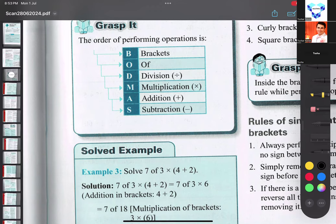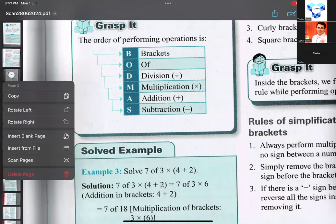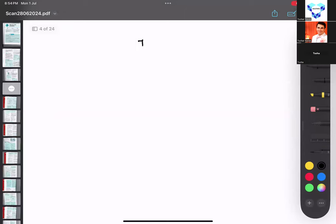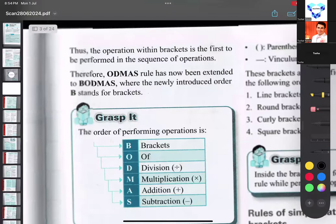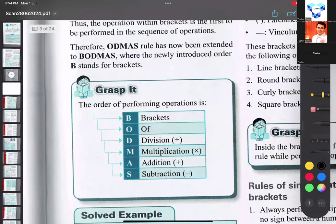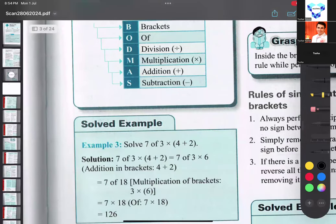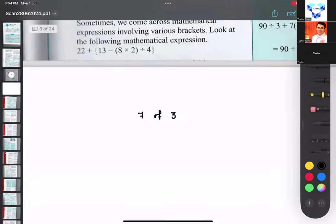So in the next line, seven of three, four plus two. You multiply four plus two.